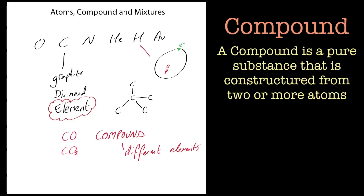To clarify: compounds are made up of different types of atoms, while elements are collections of the same atom. 'Elements' is a generic term for the pure form of a particular atom. So we've got compounds made up of different types of atoms, and elements which are collections of the same atom.